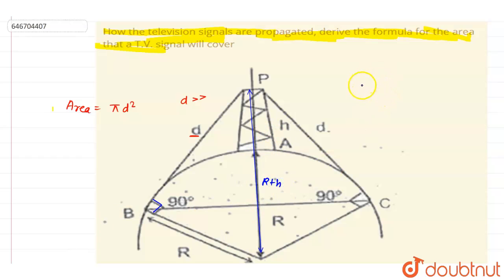So if you see here, if I apply the Pythagorean theorem, it will be d² + R² equals (R+h)², so it will be R² + h² + 2Rh.